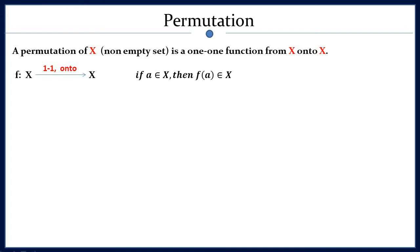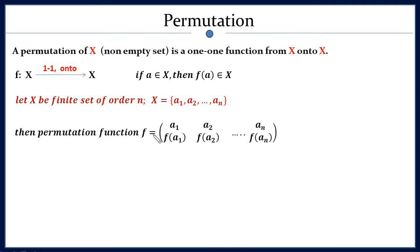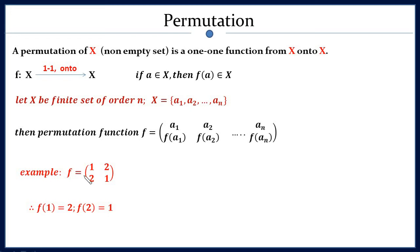This definition will be clear when we see an example. For any finite set of order n, we can denote f as: f = (a1, a2, ... an / f(a1), f(a2), ... f(an)). Here f(a1) is the image of a1, and f(a1) must be a member of set X. For example, f given as (1 2 / 2 1) means f(1) = 2 and f(2) = 1.